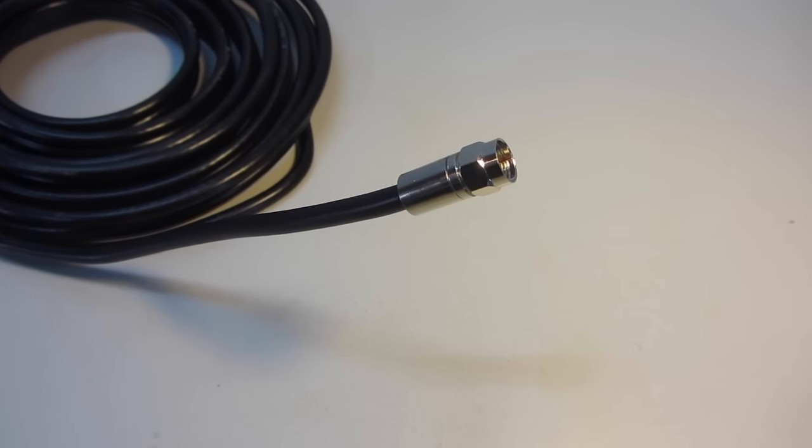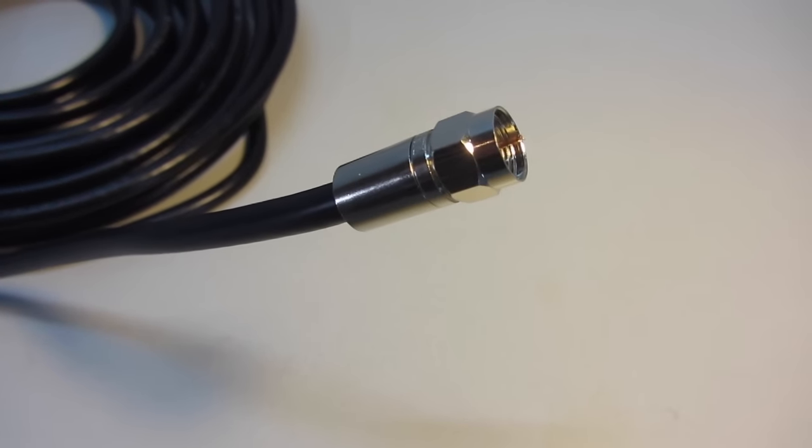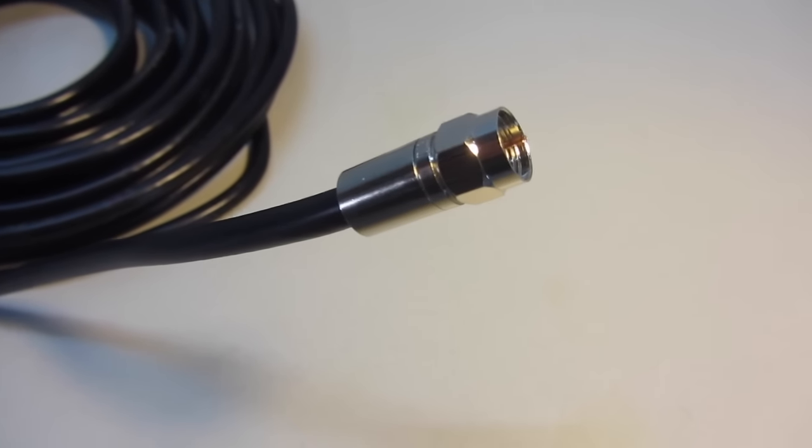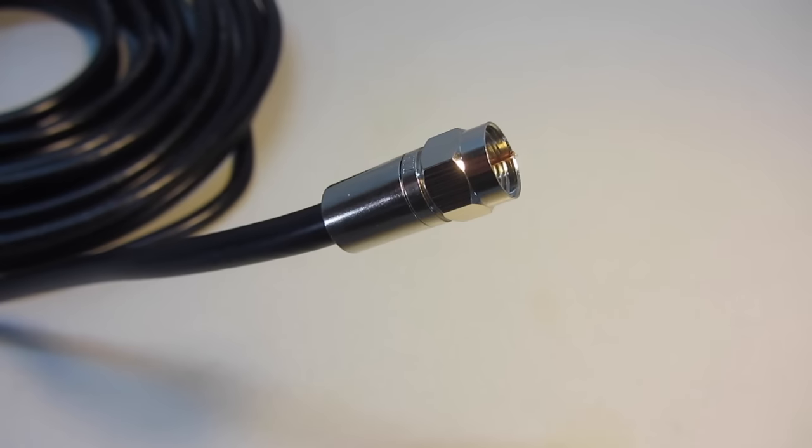I'm going to show you how to install a connector to an RG6 coax cable. This connector is also called an F connector.